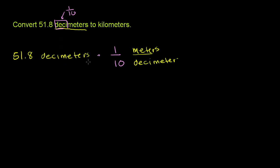Now, if you multiply these two things, what do we get? Well, the decimeters cancel out, and we divide 51.8 by 10. Multiplying by one-tenth is the same thing as dividing by 10. So this is going to be equal to 51.8 divided by 10. The decimal is just going to move to the left. It's going to be 5.18. So this is going to be 5.18 meters.